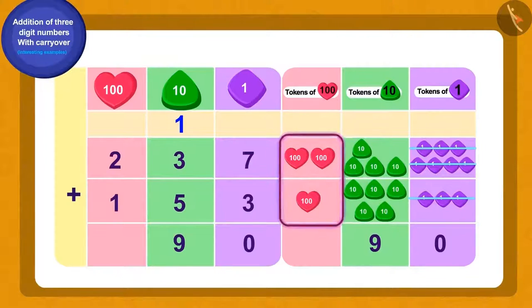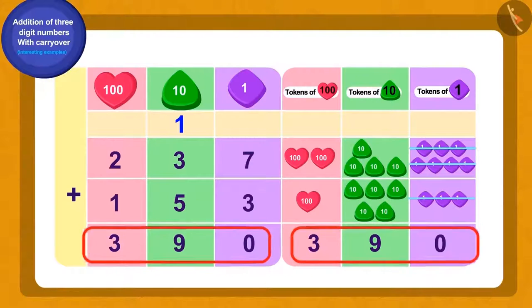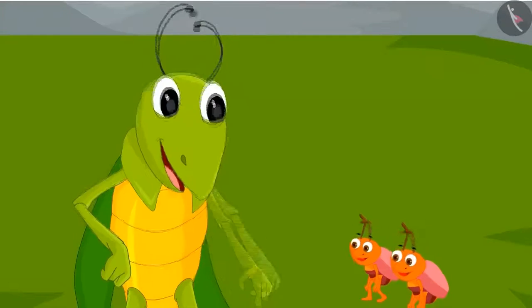Now, at the end, if we add all hundreds-digit place numbers, we will get 3. Thus, there were a total of 390 animals in the herd.